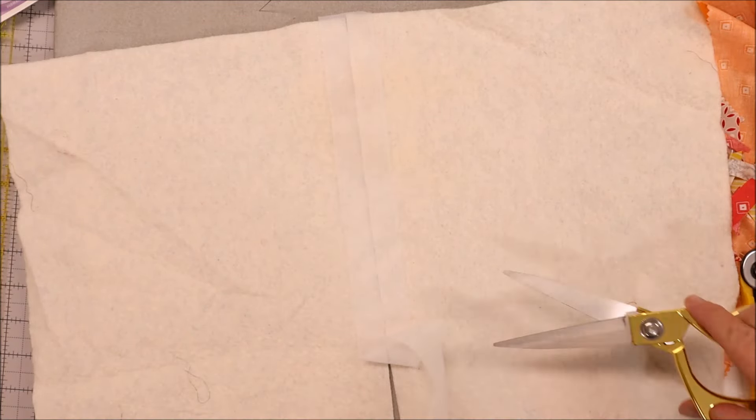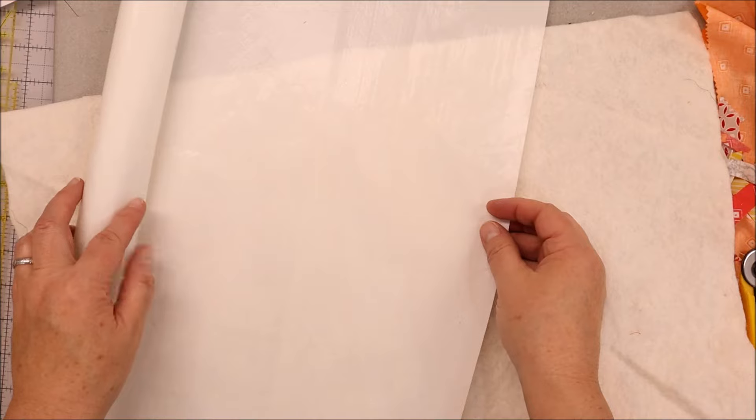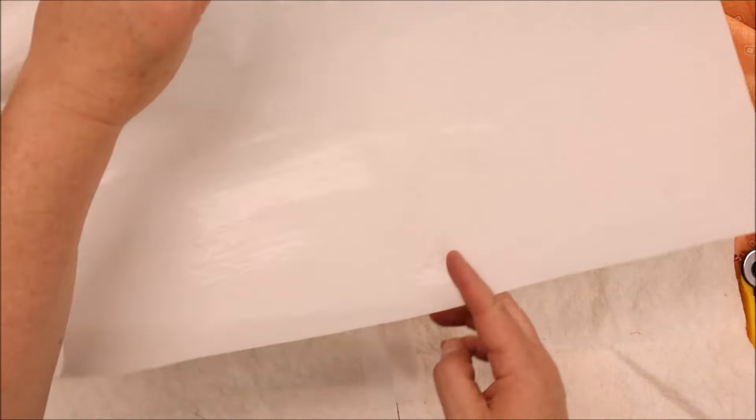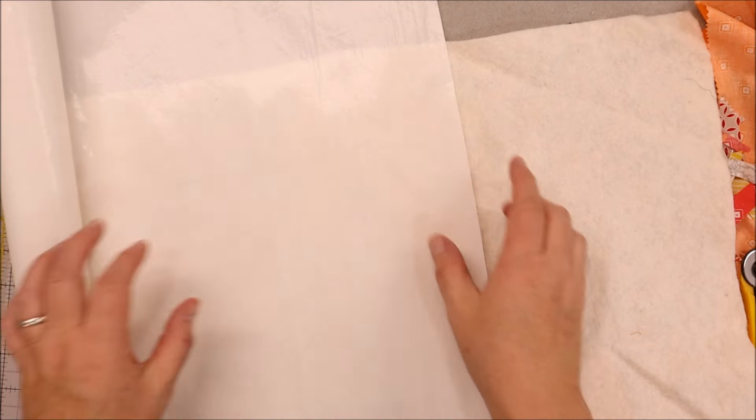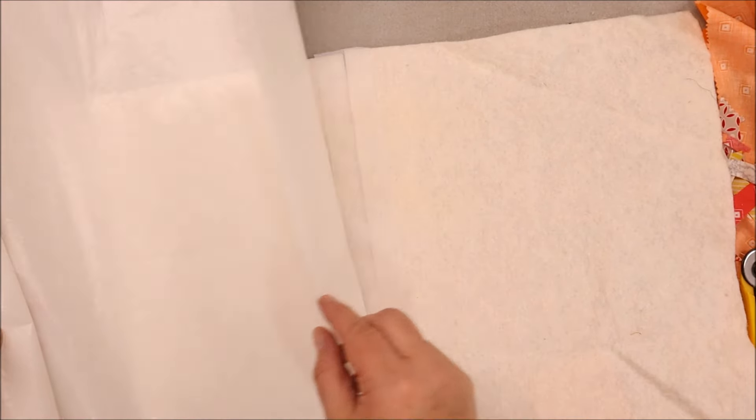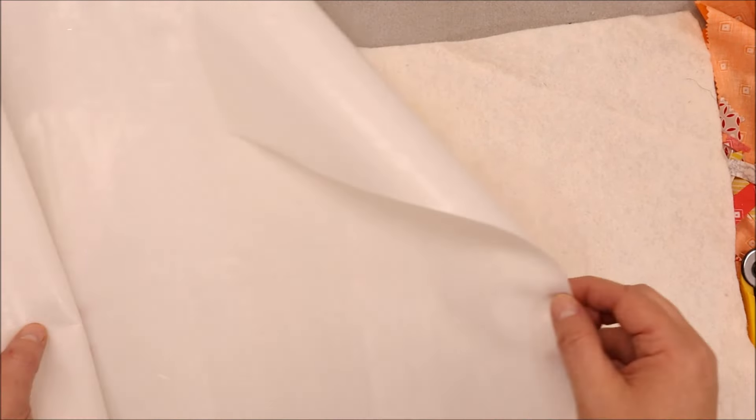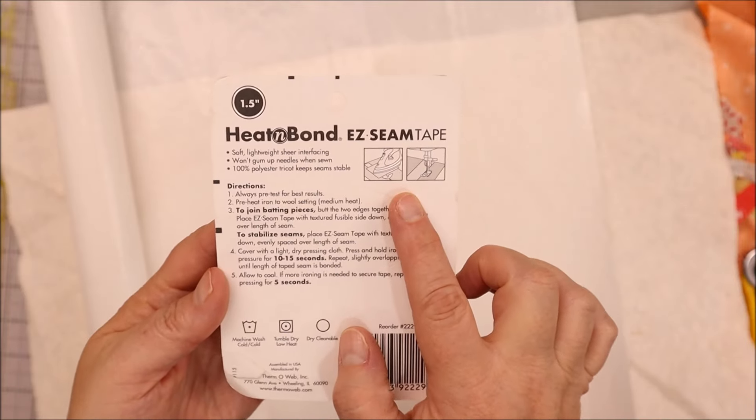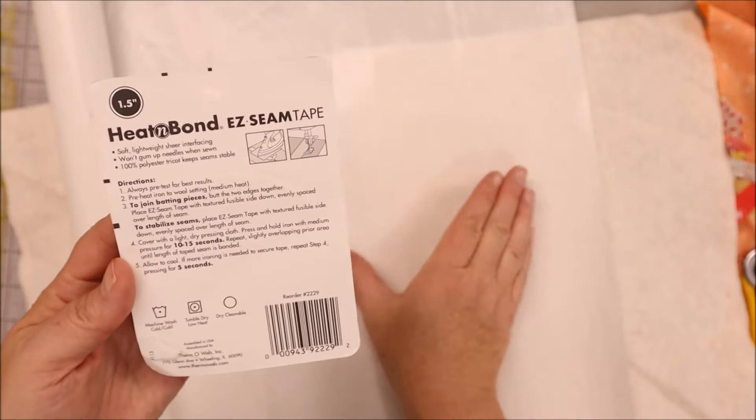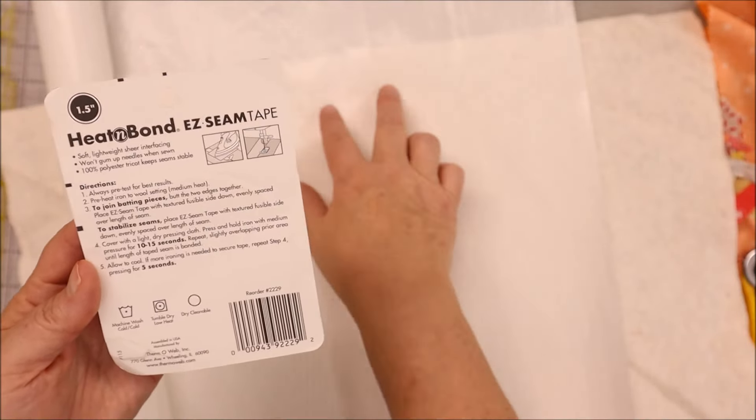Now if you feel this, there is one side that is really smooth and then the other side is rough. The side that's rough has the glue that fuses to your batting. And if you don't want to do the full length, you can cut this into pieces so it doesn't roll off your table or fuse where you don't want it to fuse. So I'm just going to trim this.